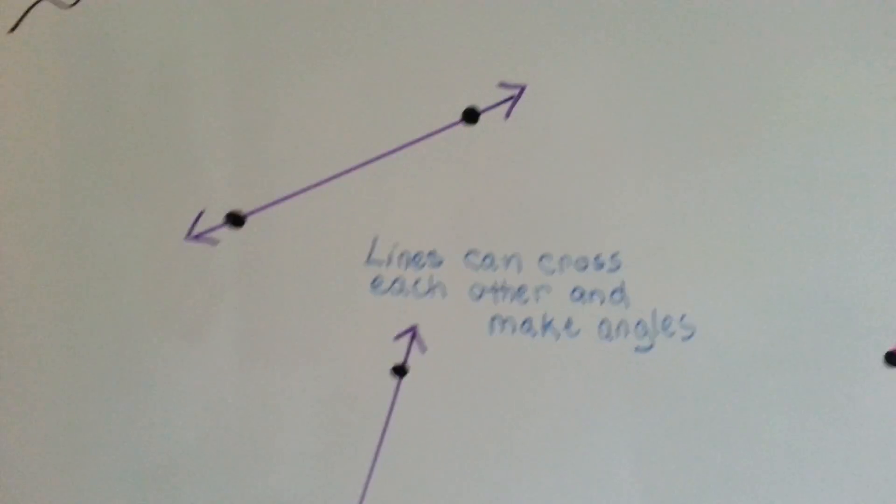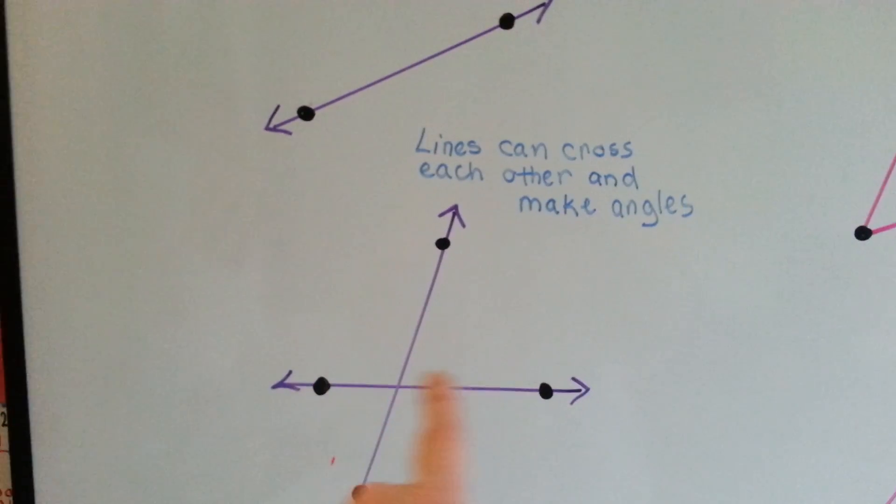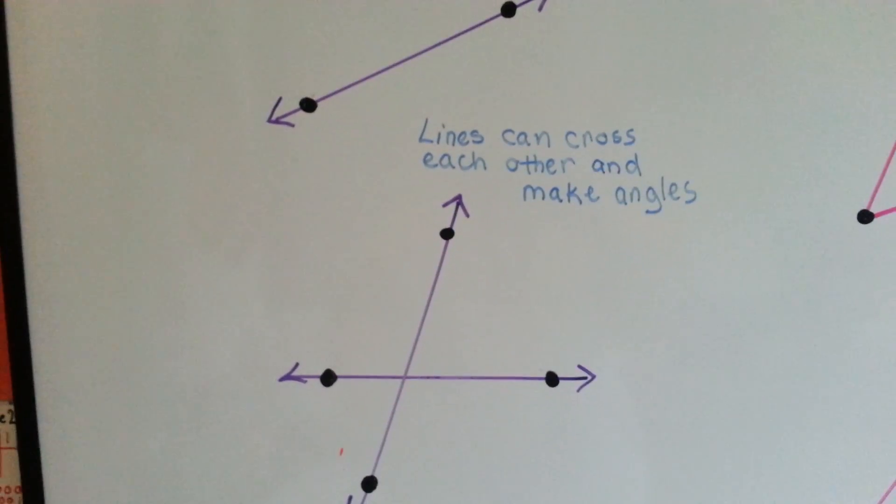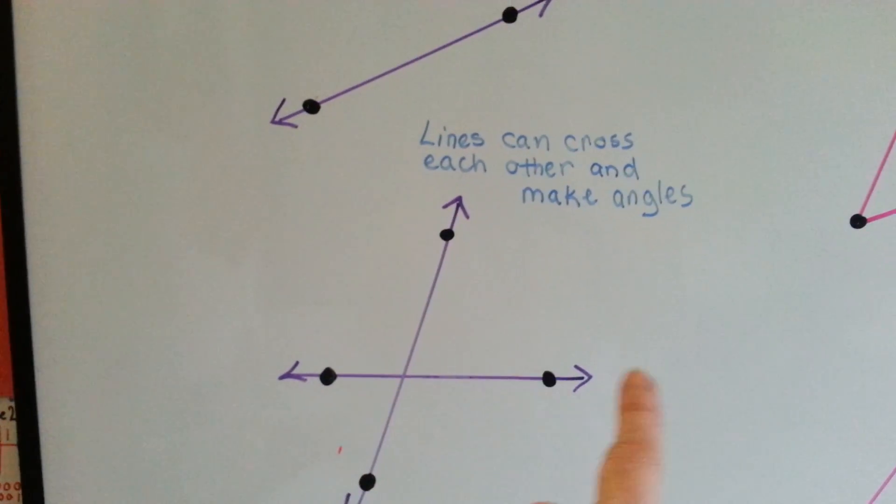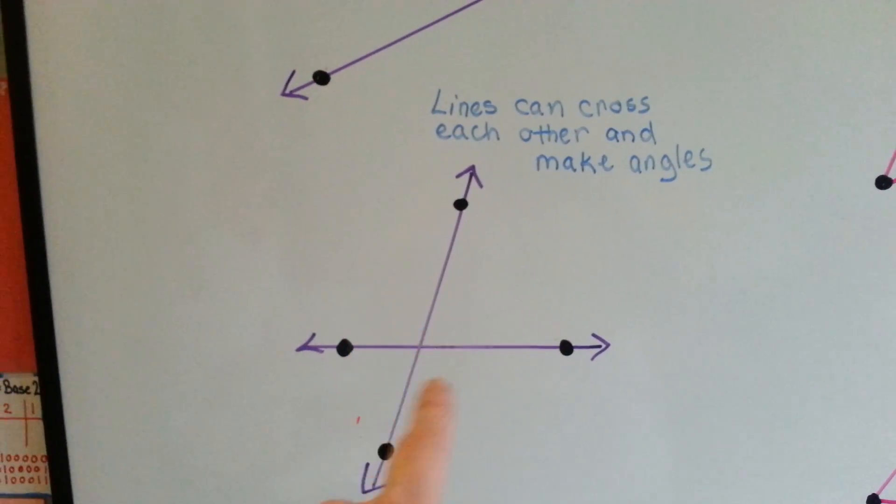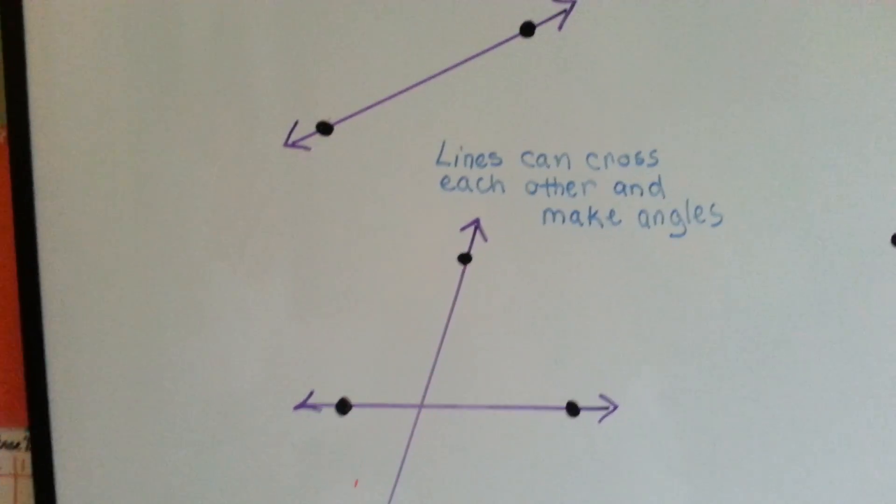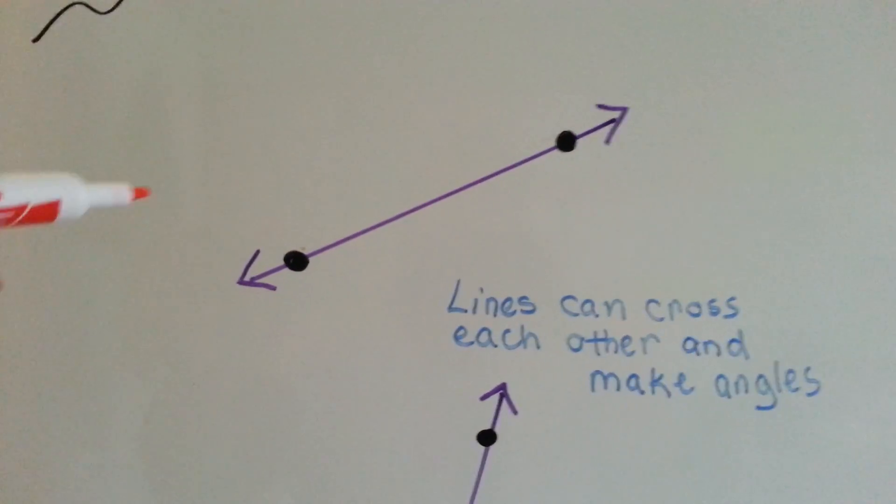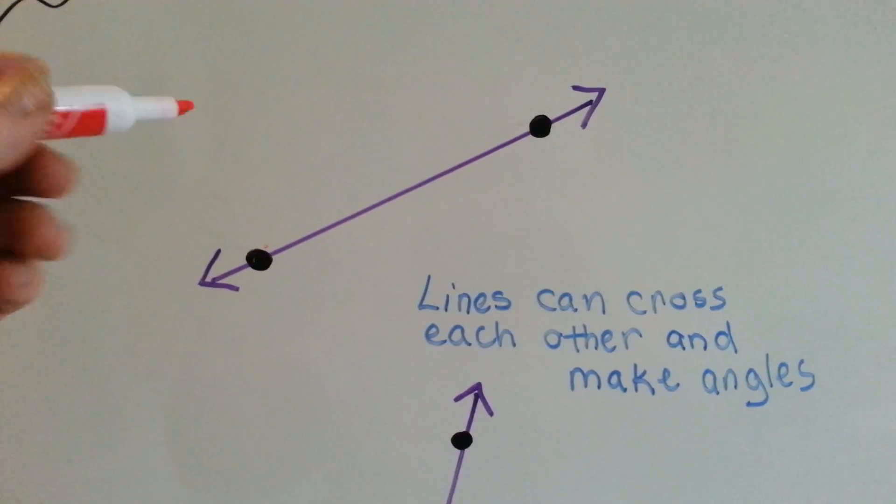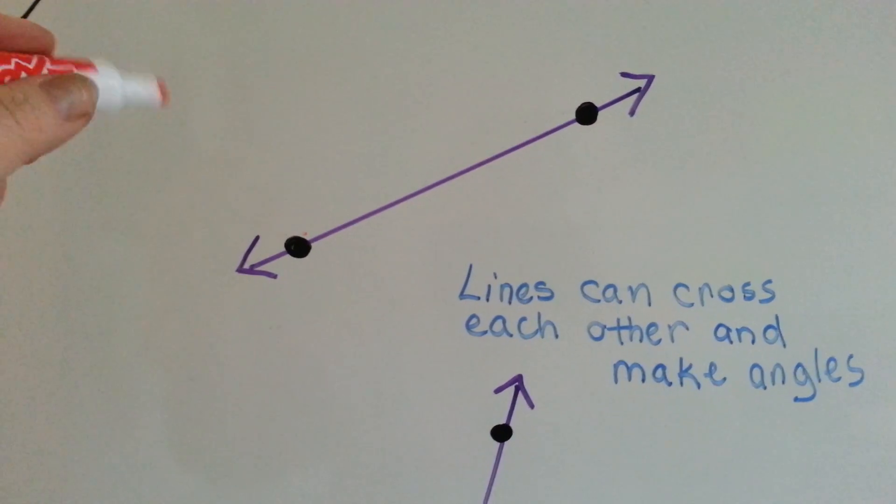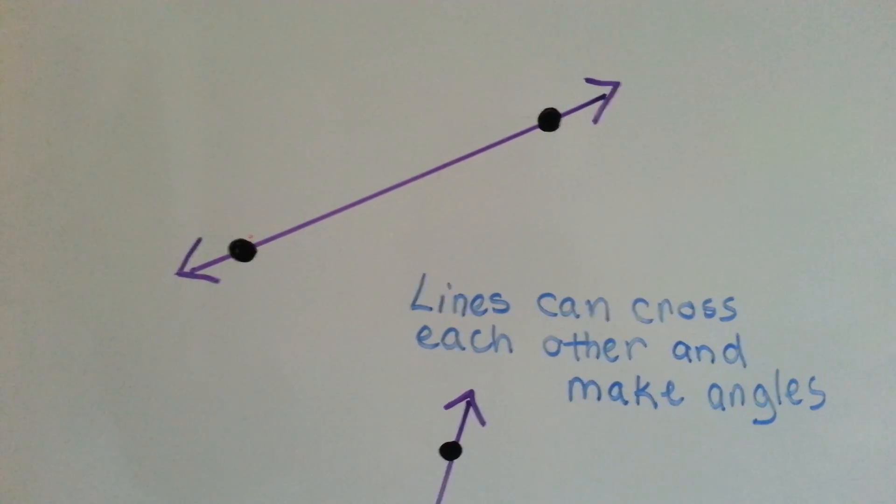Lines can cross each other and make angles. See that? Two lines, one here and one here, and they are crossing each other and they are making these angles inside. If we wanted to label a line, remember, it's got to be capital letters and they've got to be in order. Any ones, doesn't matter.